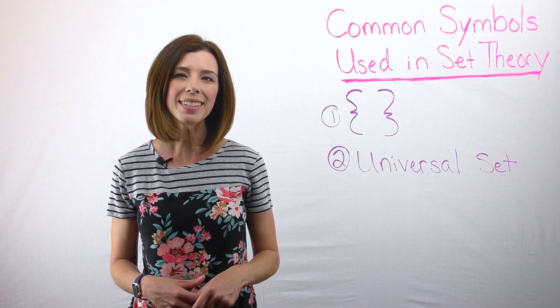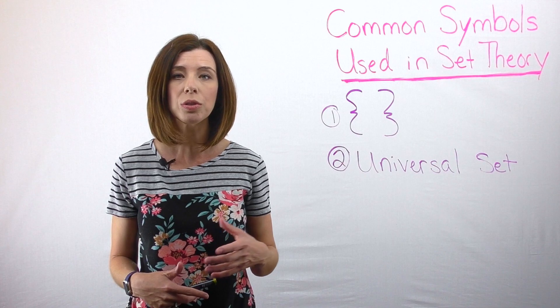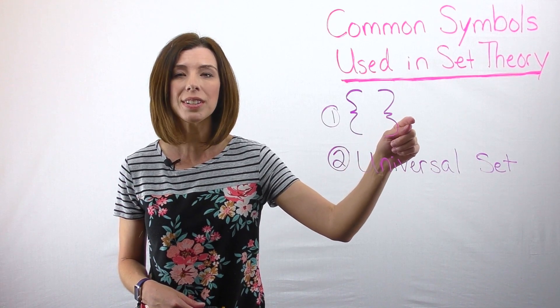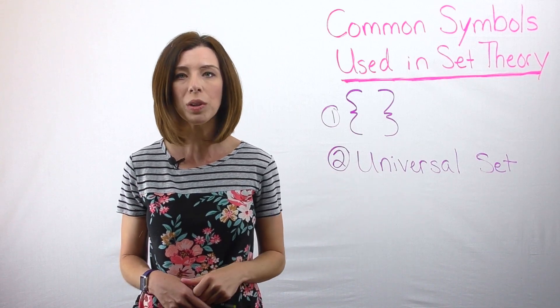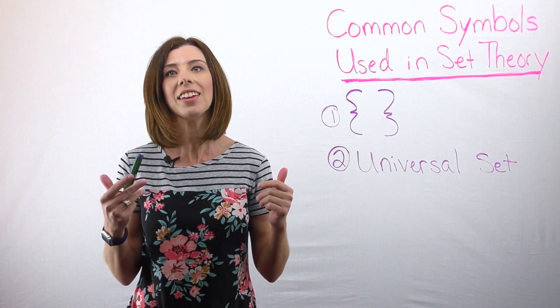For example, if I said your universal set was all digits from zero to nine, then maybe a subset or a set could be just odd numbers. But my universal set would literally be zero, one, two, three, four, five, six, seven, eight, and nine.